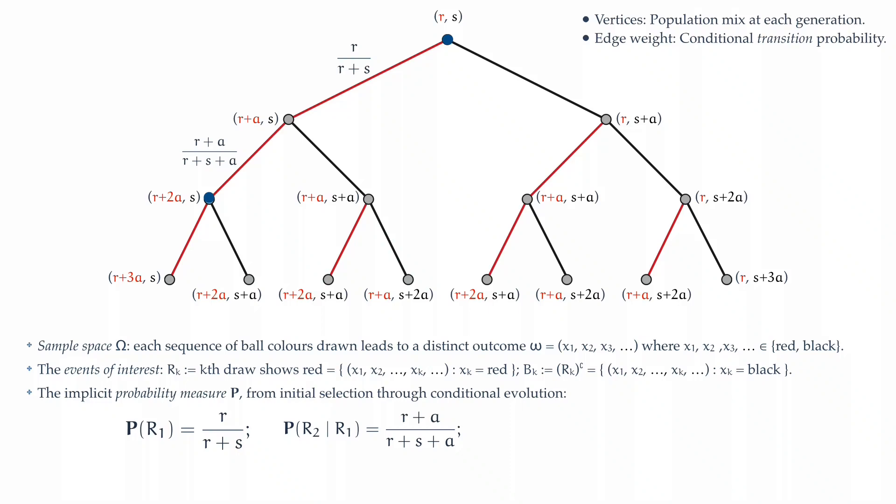And working in this fashion, we can move on to the next step. The probability of drawing a third red ball, given that the first two balls drawn were red, is now, again, written on the edge. It's R plus 2a divided by R plus s plus 2a. Now we can readily see how we can fill out other transition probabilities along these lines.